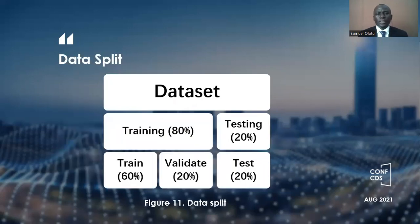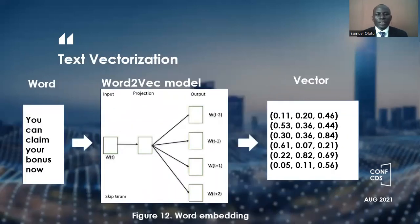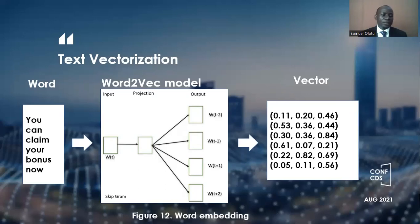Data is split into training, validation, and testing using a ratio of 60%, 20%, and 20% respectively. Text vectorization is carried out using the word2vec method, where the messages in the dataset are broken down into tokens — that is, individual words — and each of those words is converted to vectors using this model, as shown in figure 12.